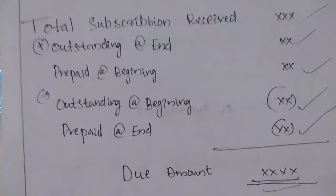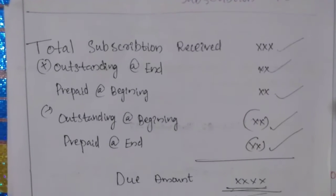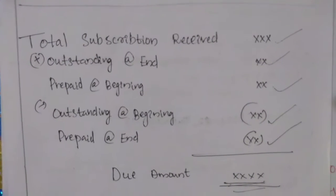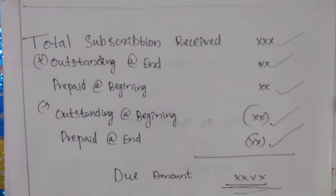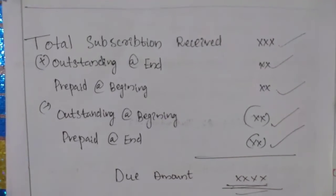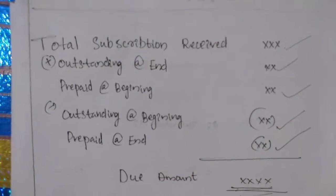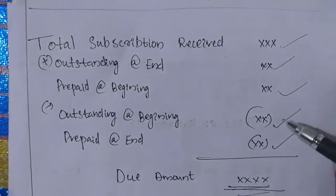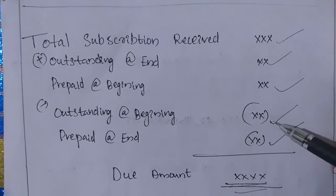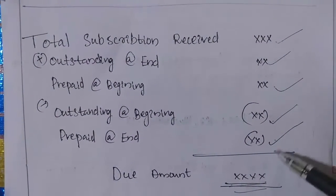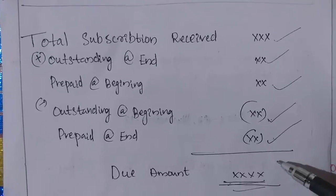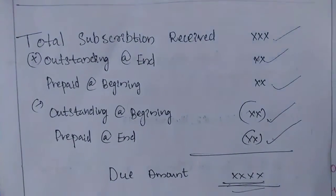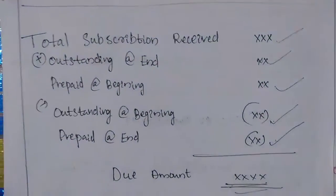Simply, you will get the answer: Due amount equals actually received, plus outstanding at the end, plus prepaid at the beginning, minus outstanding at the beginning, and minus prepaid at the end. So we will get the due amount. This is the received income or expense. Stay well, goodbye.